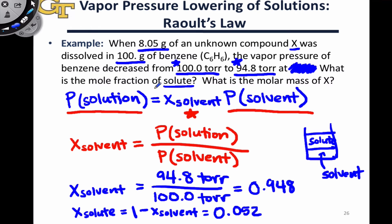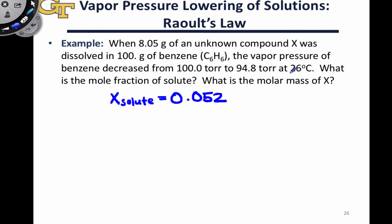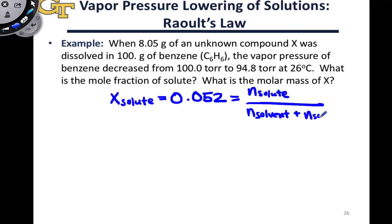This is the mole fraction of the solute, and we have answered the first question. Let's now move on to the second question, the molar mass of X. This problem now boils down to stoichiometry with a little bit of algebra. We can write the mole fraction of the solute as the number of moles of solute divided by the total number of moles, which for a two-component solution is the moles of solvent plus the moles of solute. Since our goal is to determine the molar mass of X, and molar mass is a ratio of mass to the number of moles of solute, the moles of solute are our key unknown.